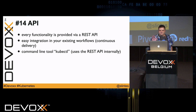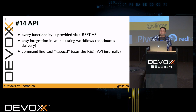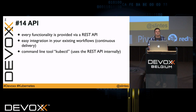Kubernetes has a very nice REST-based API, making it easy to integrate into your existing environment and workflows — for example for continuous delivery. There is also a command line tool called kubectl which internally uses this REST API.